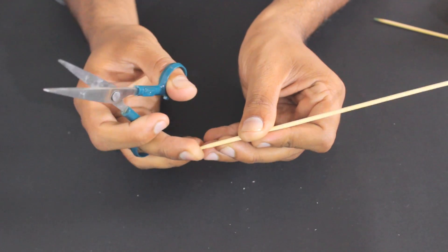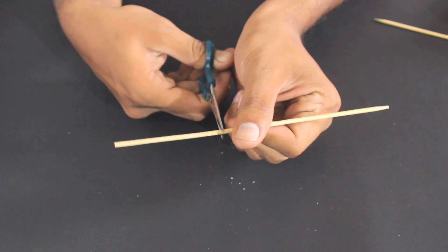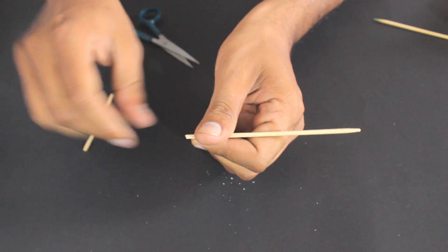Take a wooden skewer, just remove the pointy end and cut and remove a small portion from the backside of it. This serves as a launcher.